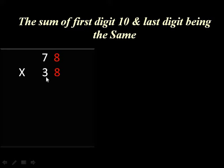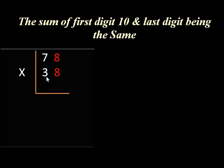The first number is 78 and the second number is 38. We find the multiplication using the L-shape method. The first digit of 78 is 7, and the first digit of 38 is 3 — their sum is 10. The last digits are both 8, so the condition is satisfied. Now: 7 into 3 gives 21, and we add the last digit 8, so 7×3 + 8 = 29. Then 8 into 8 = 64.